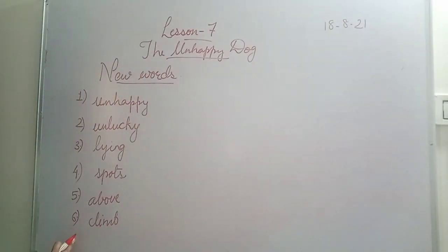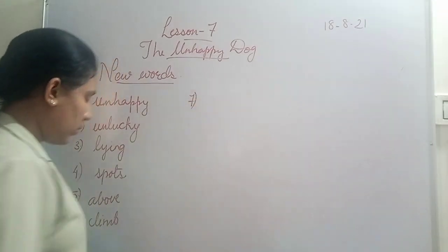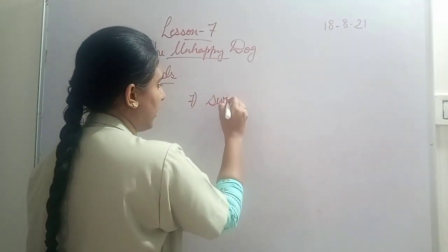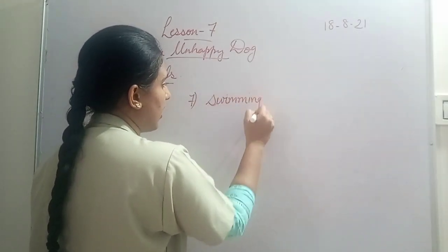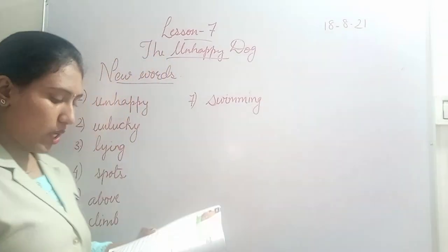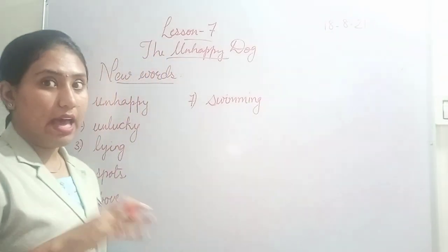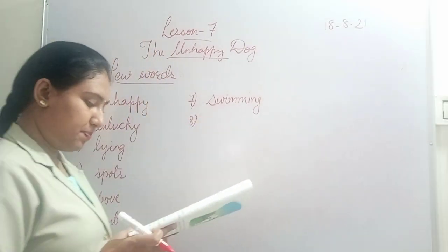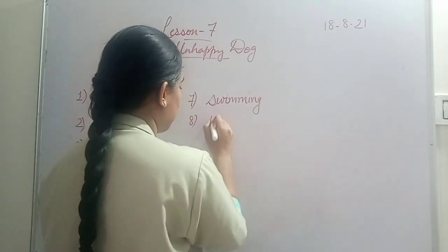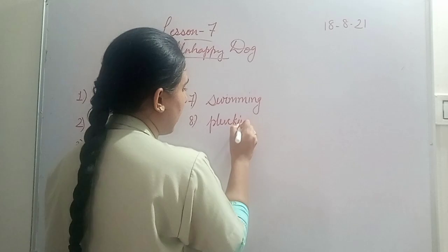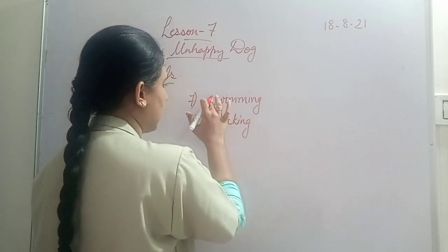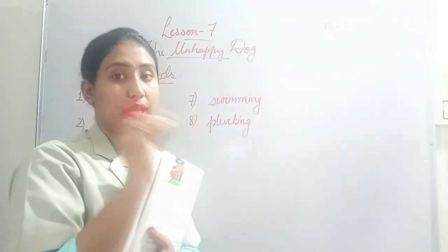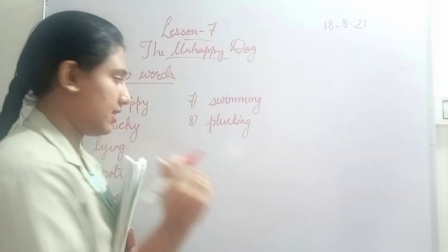Seventh word is 'swimming,' S-W-I-M-M-I-N-G. Swimming means to swim. Fishes were swimming in the river. Eighth word is 'plucking,' P-L-U-C-K-I-N-G. Plucking means to pull or tear, like plucking flowers or leaves.